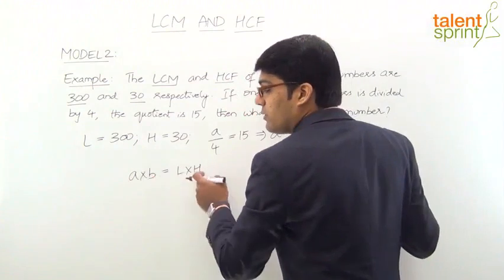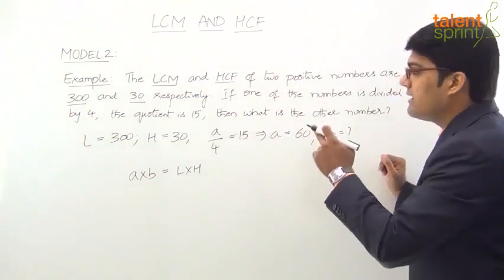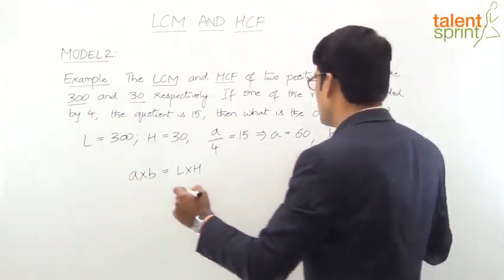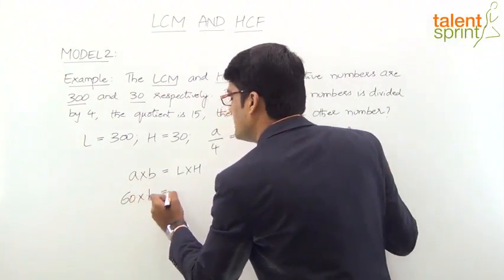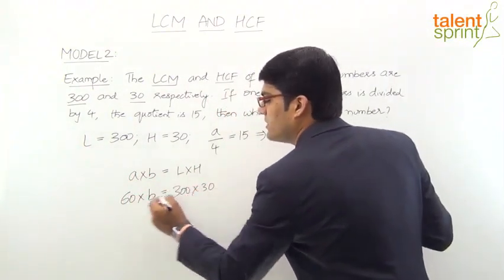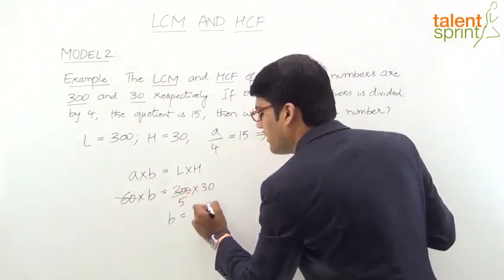Now, in these 4 unknown variables, we have 3 values: A, H, and L. We need to find B. So we substitute: 60 times B equals 300 times 30. 60 cancels, leaving 5 times. So B value is 5 times 30, which is 150.